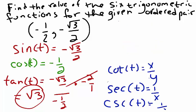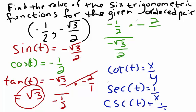Next we'll find cotangent of t. Since cotangent of t is equal to x over y, we'll write negative 1 half divided by negative square root of 3 over 2. Again, we'll take the fraction on the bottom, flip to its reciprocal, and multiply with the fraction in the numerator. We get negative 2 over square root of 3, the 2's cancel out, and negative times negative gives us a positive.